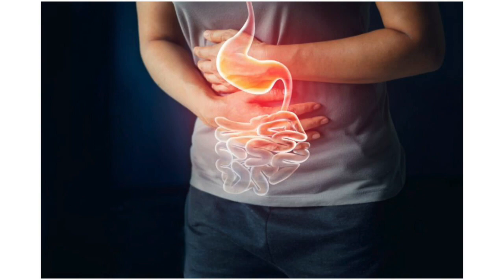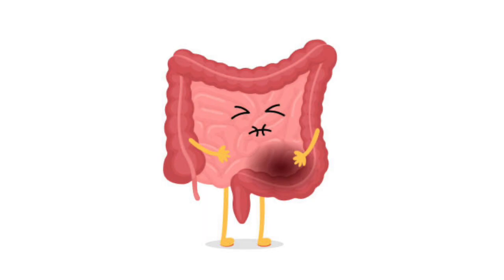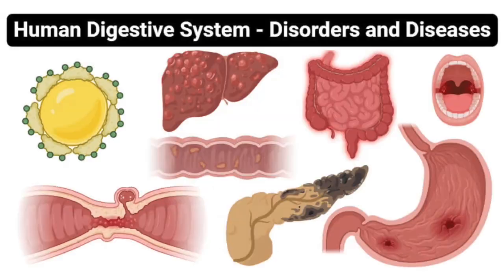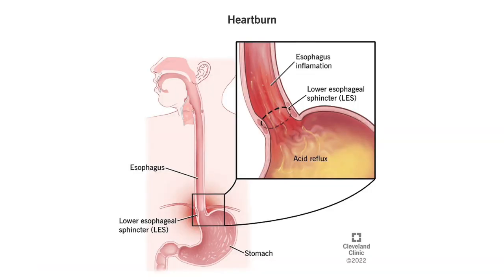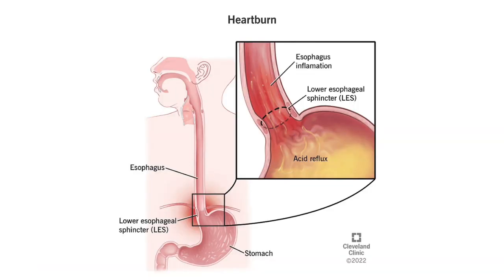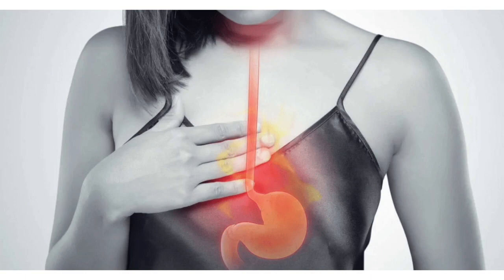Like any other organ system, the digestive system will have problems and conditions that affect us. These problems can be temporary like diarrhea and constipation, or they can be chronic diseases that are life-threatening. Let's start with heartburn. Heartburn occurs when acidic digestive juices from our stomachs go to the esophagus. This causes an uncomfortable and irritable feeling in the chest area, and sometimes this feeling goes all the way up to the throat.